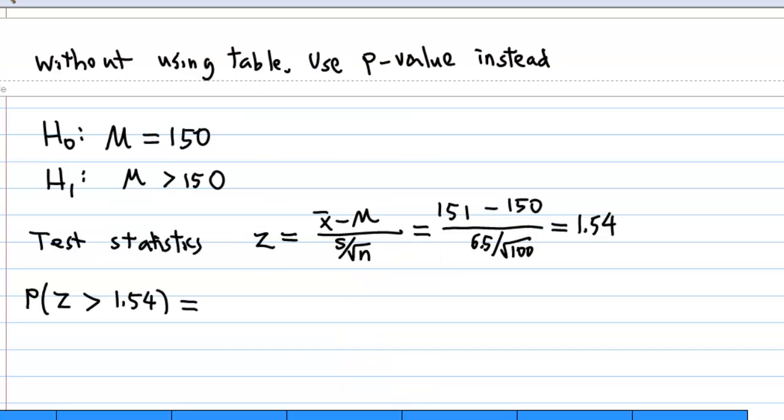We can get the same conclusion without using the standard normal table. Instead, we can use a p-value. So our test statistic is 1.54, so we look at the probability of z greater than 1.54.